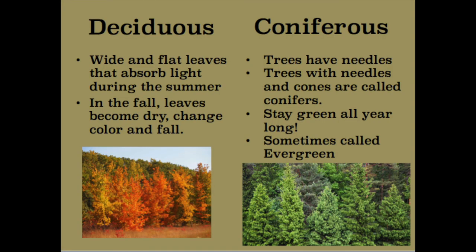There are two types of temperate forests: deciduous and coniferous. In a deciduous forest, the trees have wide and flat leaves that absorb sunlight during the summer, and then in the fall these leaves become dry, change color, and fall off the trees. Some of these trees are oaks, elms, and ash trees. In the coniferous forest, the trees have needles. Trees with needles and cones are called conifers, which is why the forest is called coniferous. These types of trees stay green all year long, and sometimes we call them evergreen trees. Some names of these trees are pines, firs, and spruce.